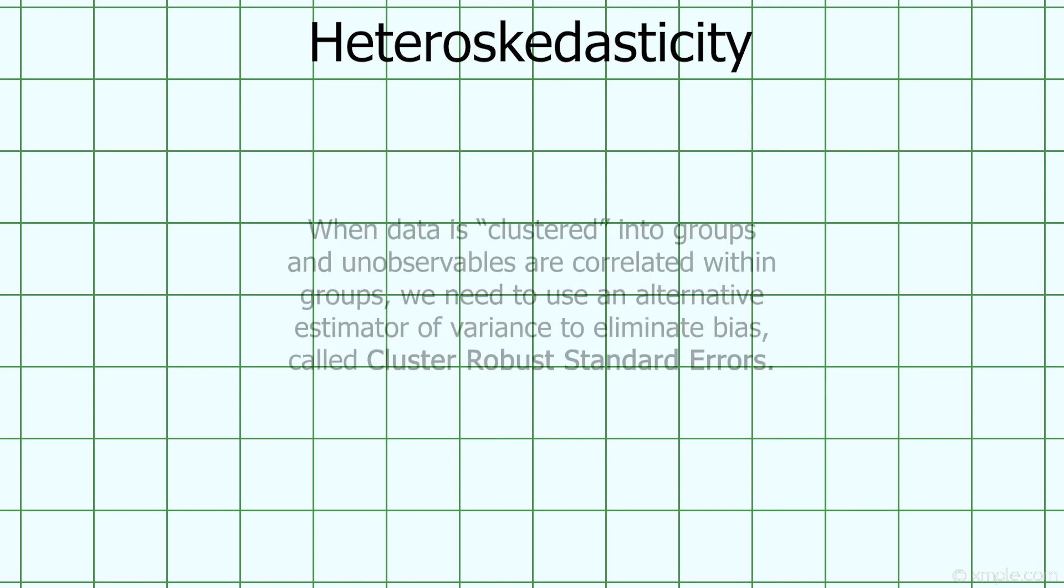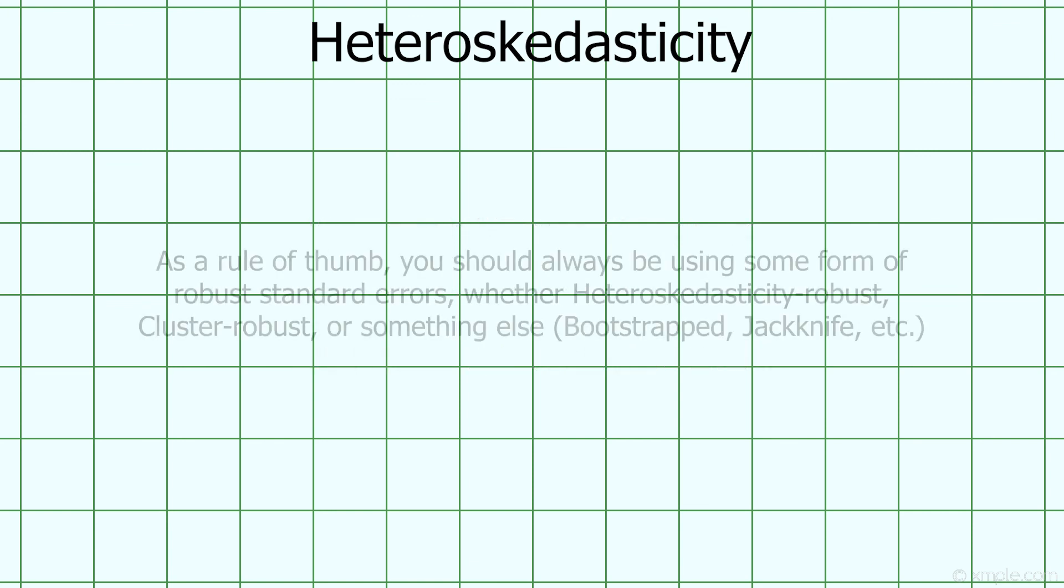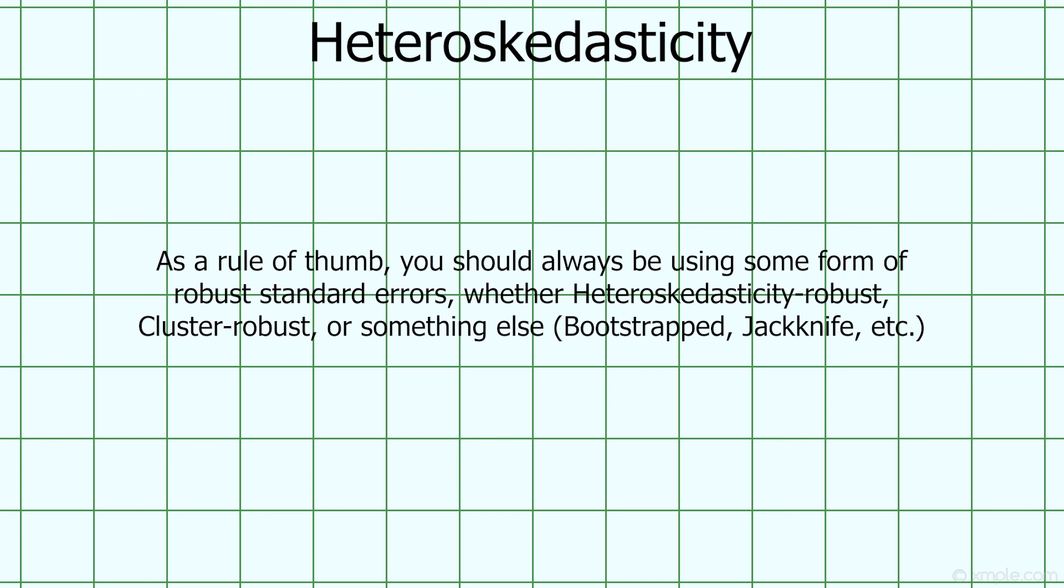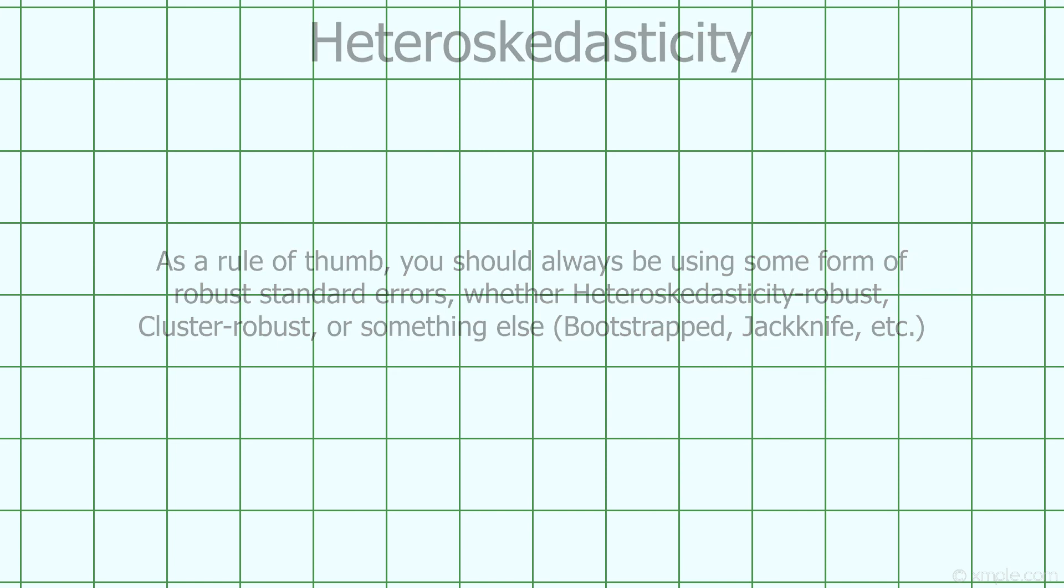There are some cases where robust standard errors might not be the best choice. For example, when observations are characterized by membership of multiple groups or clusters, then we should use a different robust estimator called cluster robust standard errors, but we'll discuss these in future weeks. As a general rule of thumb for now, if your data is characterized by clustering, use clustered standard errors, otherwise use heteroscedasticity robust standard errors, and just leave the regular standard errors alone.